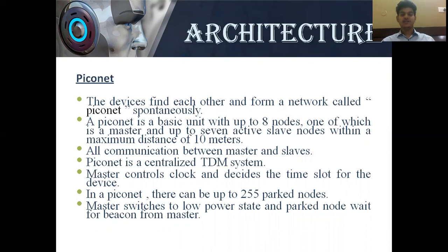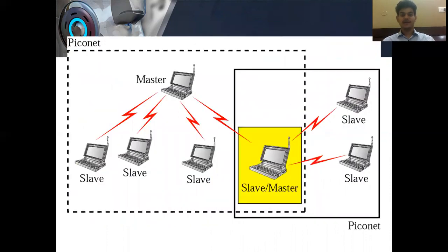The network where devices find each other is called a Piconet. A Piconet has basic structural units: one master and up to 7 active slaves, with a maximum distance of 10 meters. Piconet is a centralized radio system. The master controls the clock and decides the time slot for each device. In a Piconet there are 256 park nodes; the master switches to low-power state and a parked node waits for a beacon from the master. In this diagram, one device is master and the others are slaves, all connected to the master.